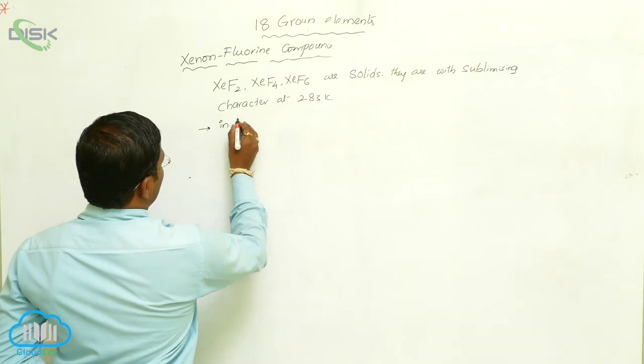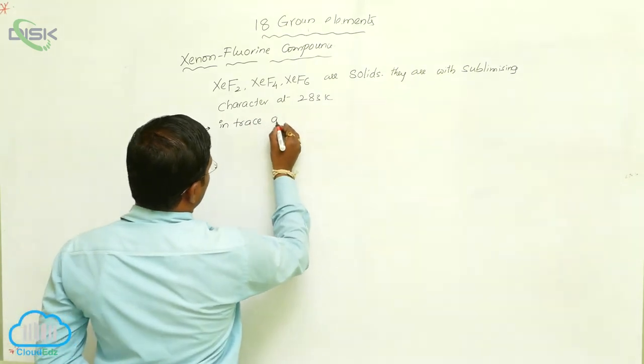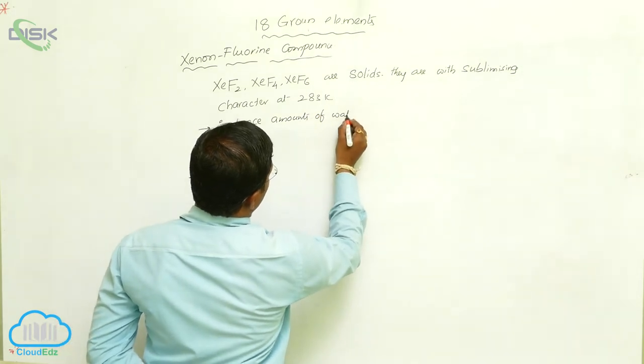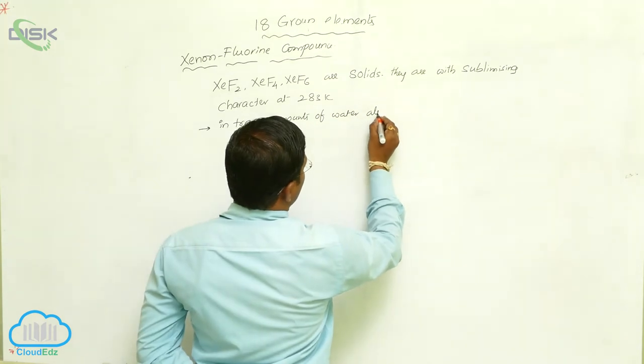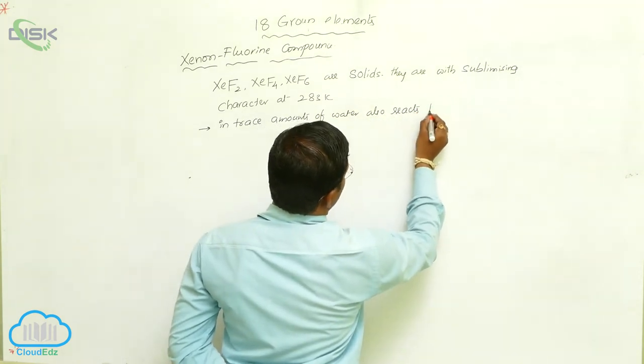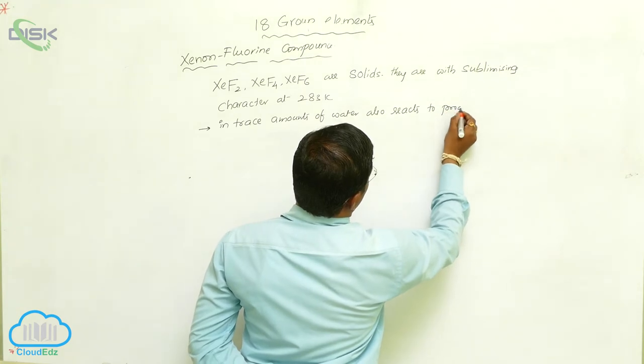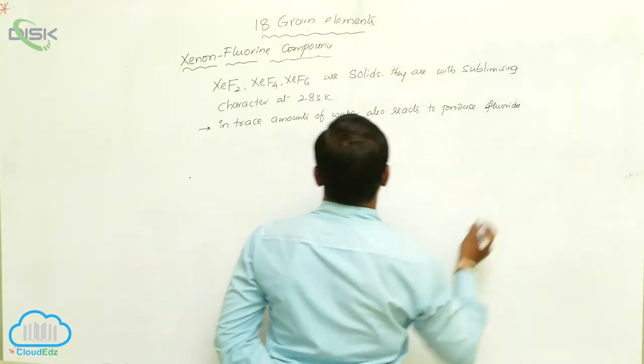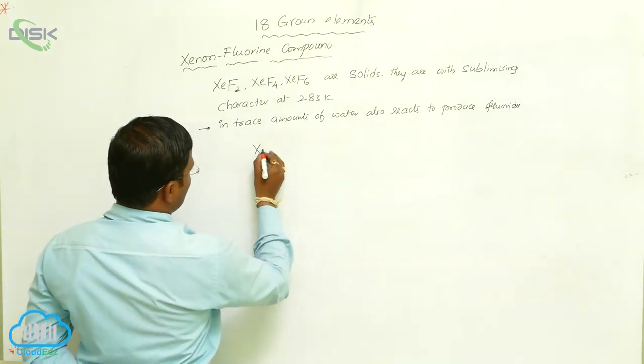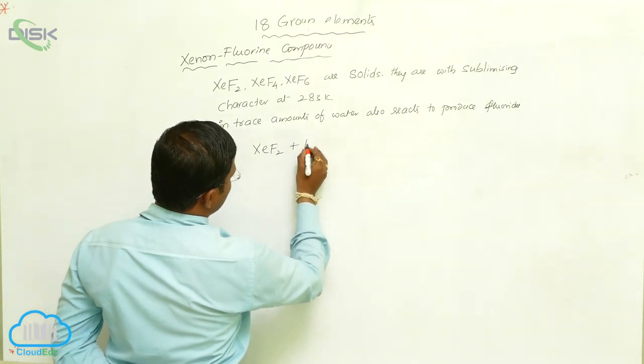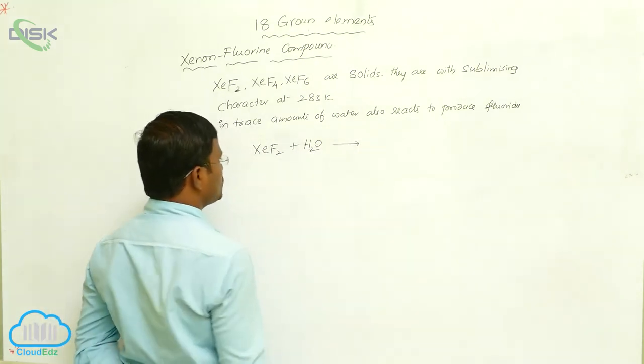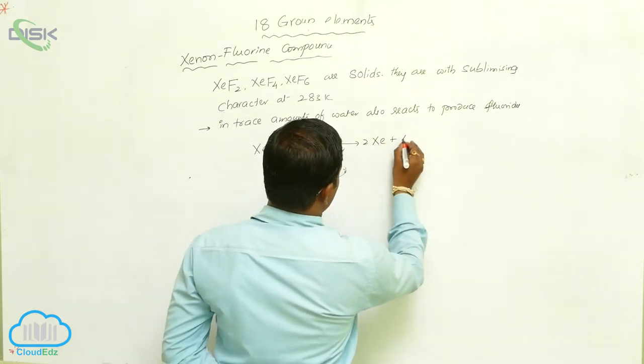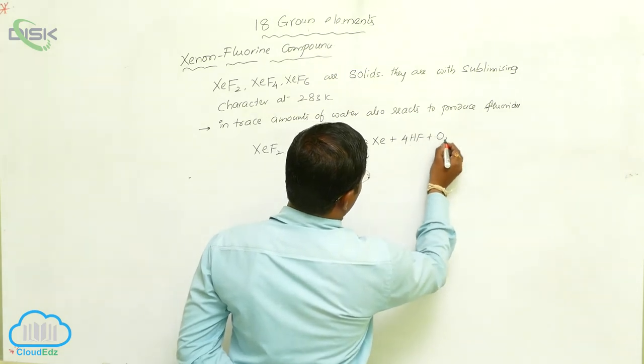In trace amounts of water, these compounds also react to produce fluorides. For example, xenon difluoride can easily react with water in trace amounts to produce xenon plus 4 hydrogen fluoride plus oxygen.